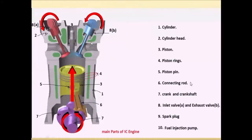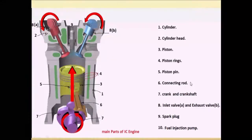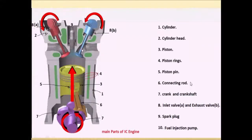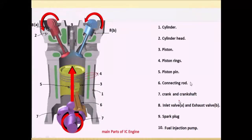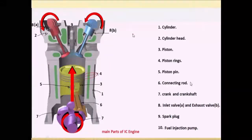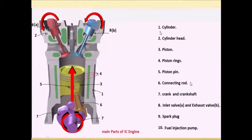Inlet valve and exhaust valve — these are the inlet valve and exhaust valve. Spark plug — this one. And fuel injection pump — in case of compression ignition engine, here we use fuel injection pump. So now let us see all these parts in brief.